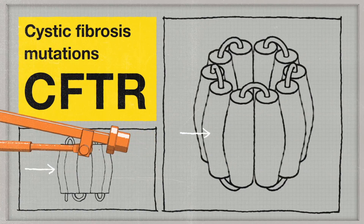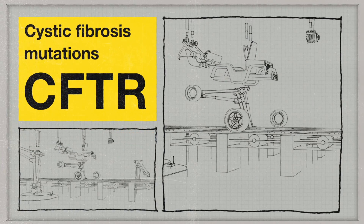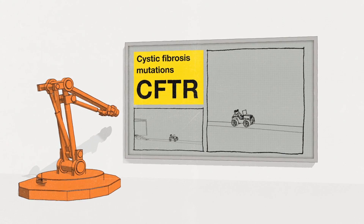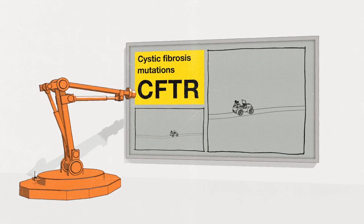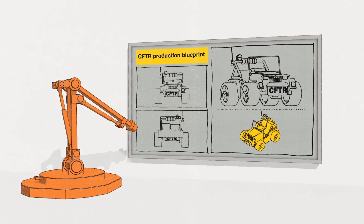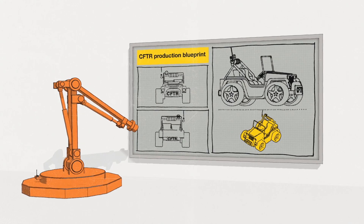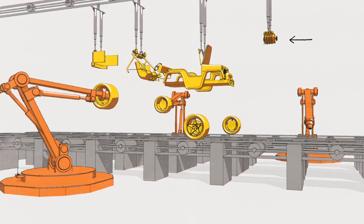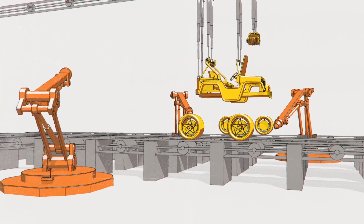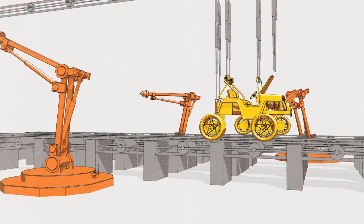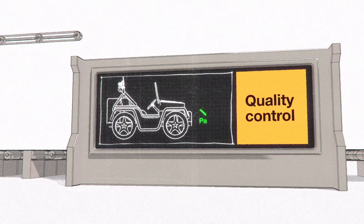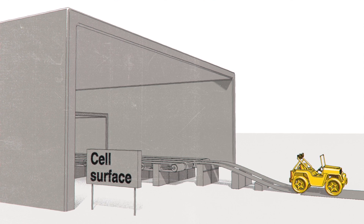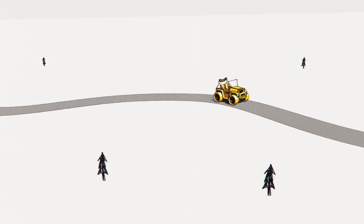Imagine a CFTR protein is a new car being assembled on a production line and driven out onto the road. It all begins with the blueprints which tell the factory how to make it. Then the components are brought together and the car is assembled, before it passes through quality control, off the production line and onto the road, ready to drive.